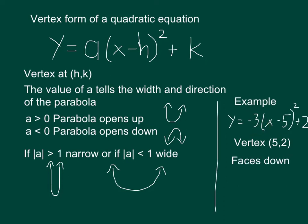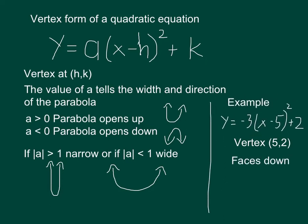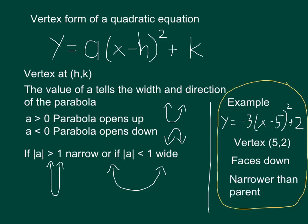And because the absolute value of negative 3, which is 3, is bigger than 1, it's going to be narrower than the parent function. So that is what I can tell about an equation just by looking at it in vertex form.